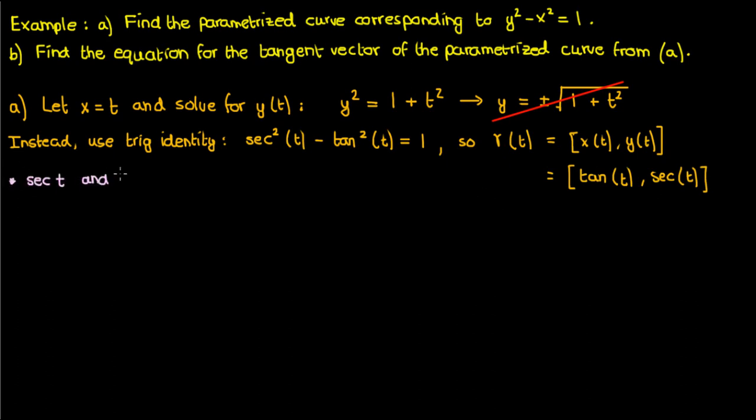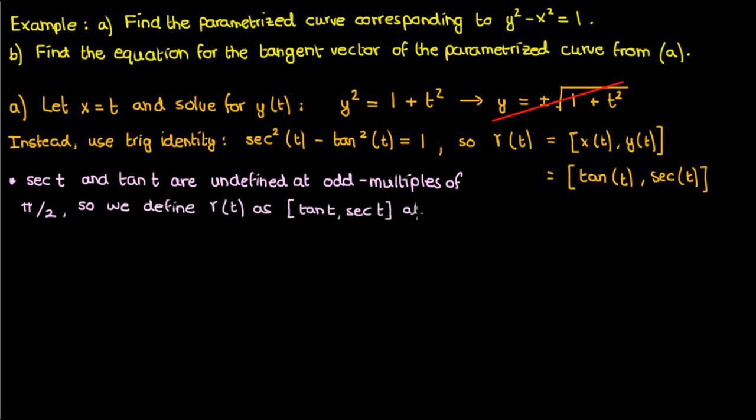The one exception is that at odd multiples of pi by 2 secant and tangent are both undefined so the best we can do is define our parametric curve at the open intervals negative pi by 2 to pi by 2 and pi by 2 to 3 pi by 2.